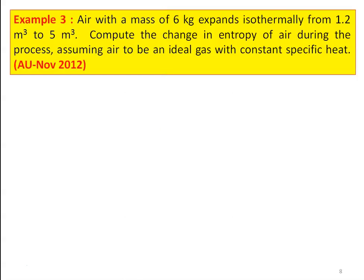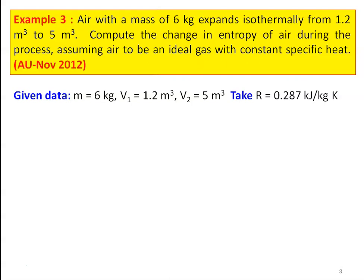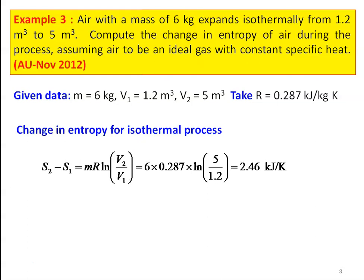We take the third example. Air with a mass of 6 kg expands isothermally from 1.2 m³ to 5 m³. Compute the change in entropy of air during the process. Assume air to be an ideal gas with constant specific heat. This is from the Anna University question paper, November 2012. Given: M = 6 kg, V1 = 1.2 m³, V2 = 5 m³, R = 0.287 kJ/kg·K. The entropy change for isothermal process: S2 − S1 = M·R·ln(V2/V1) = 6 × 0.287 × ln(5/1.2) = 2.46 kJ/K.